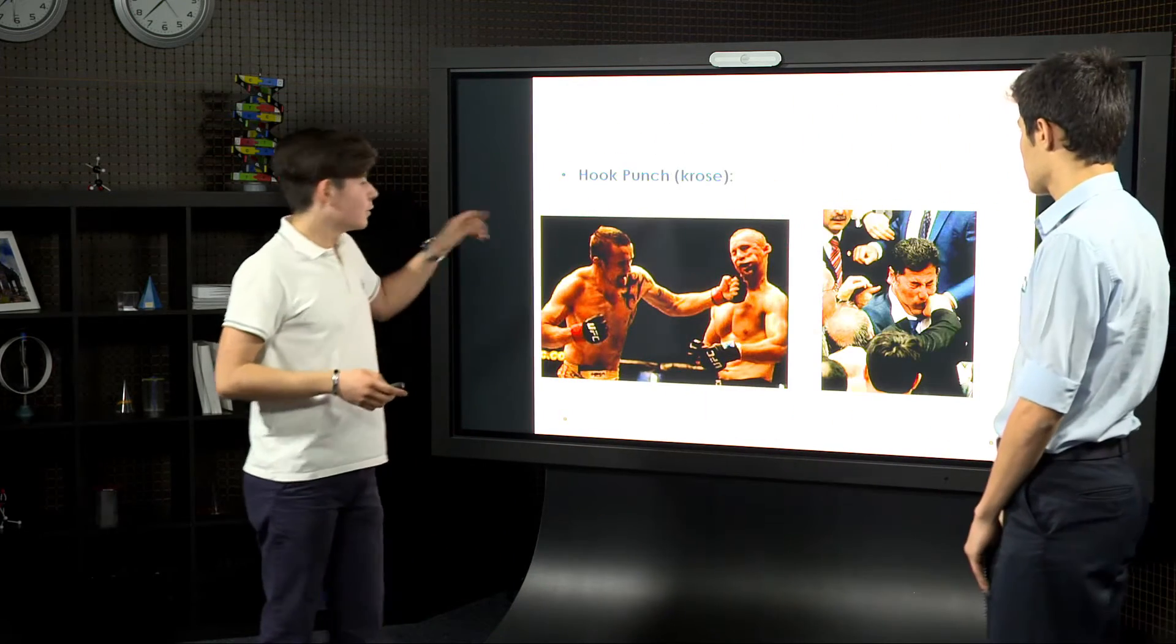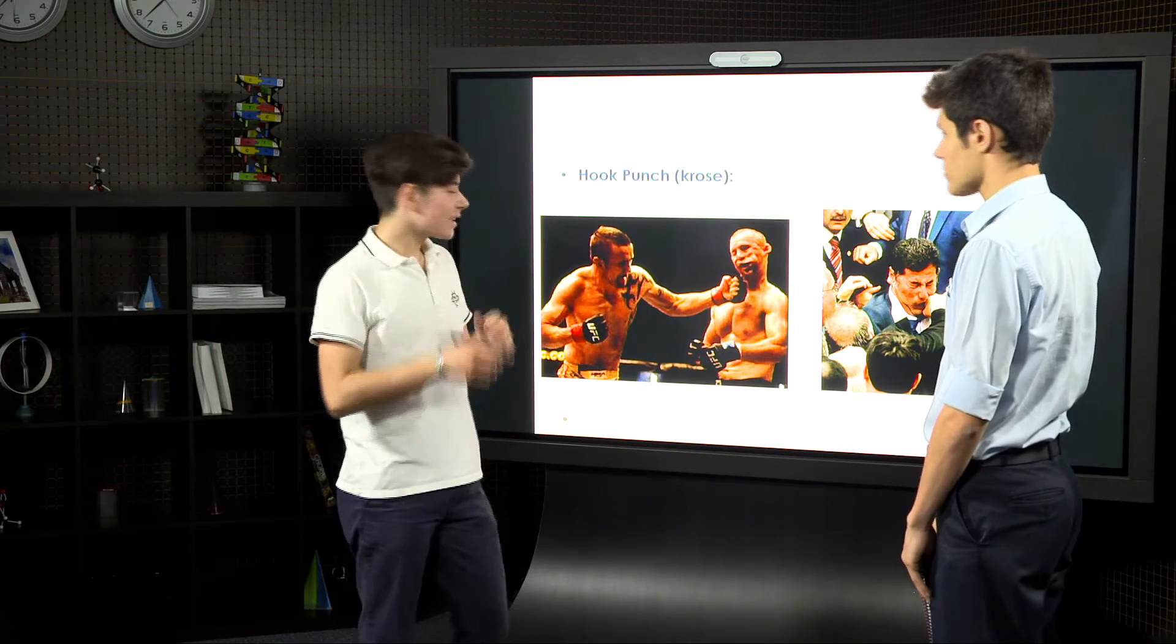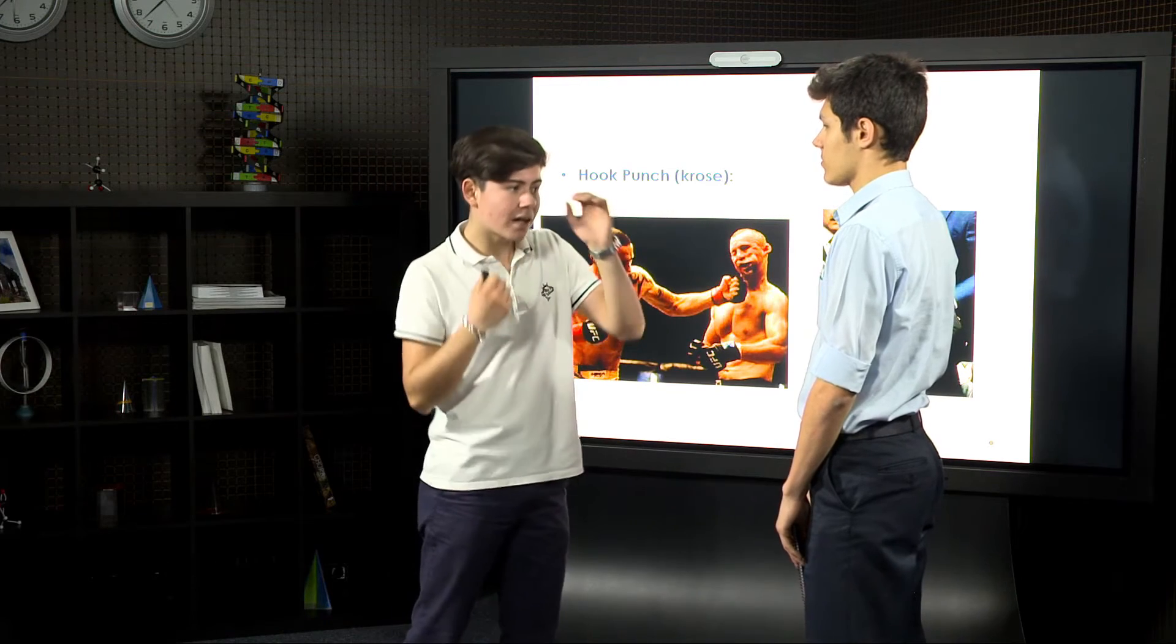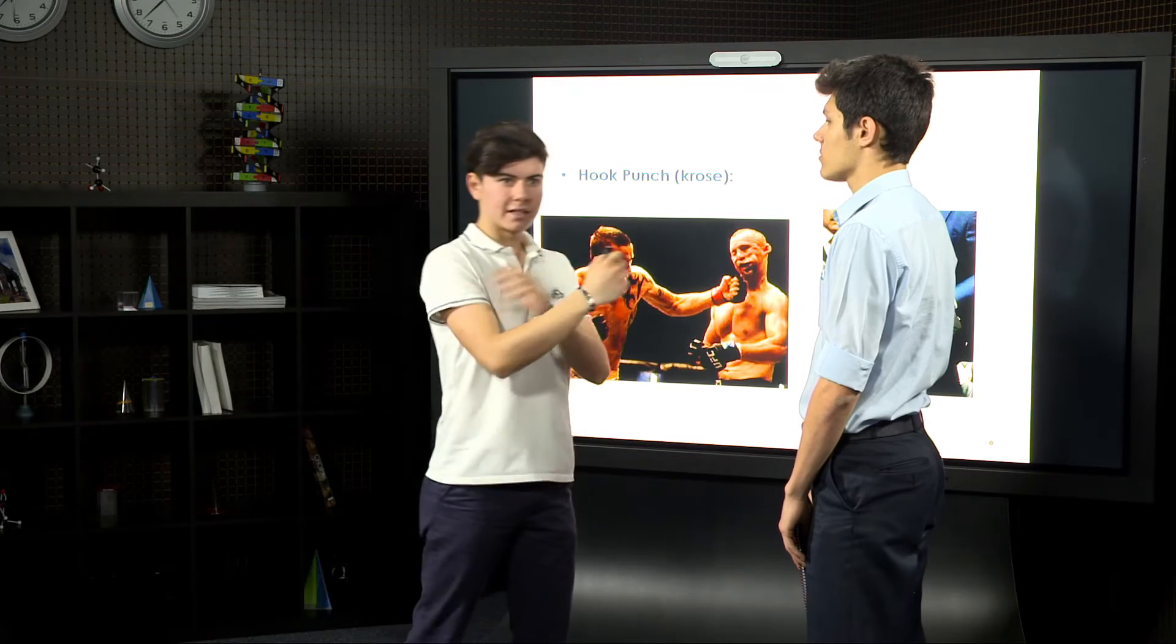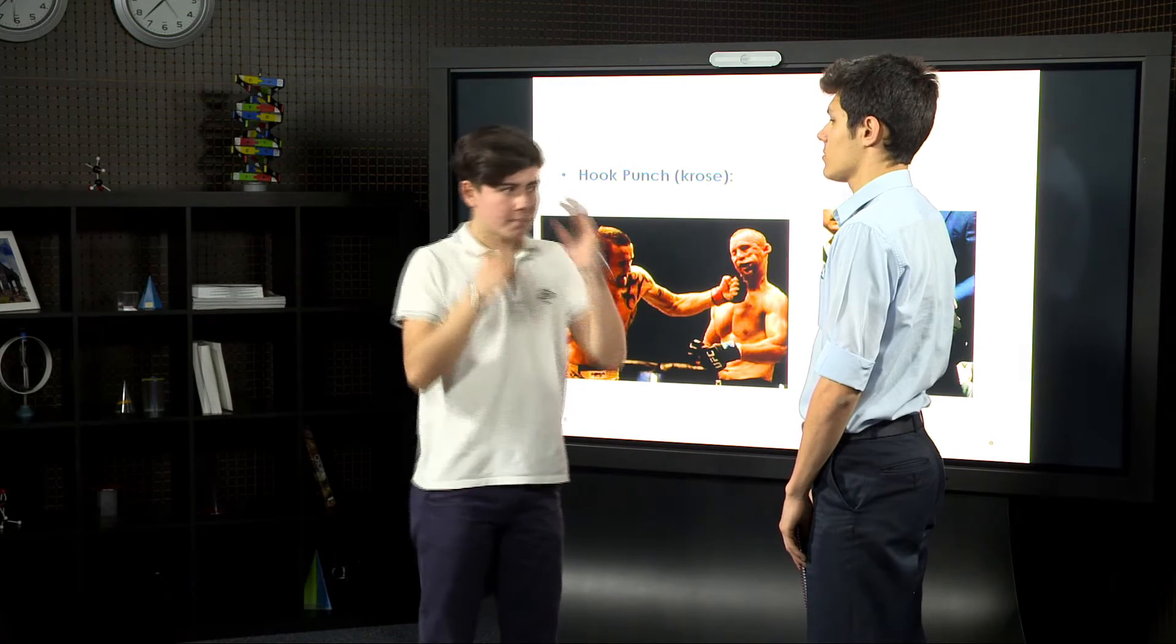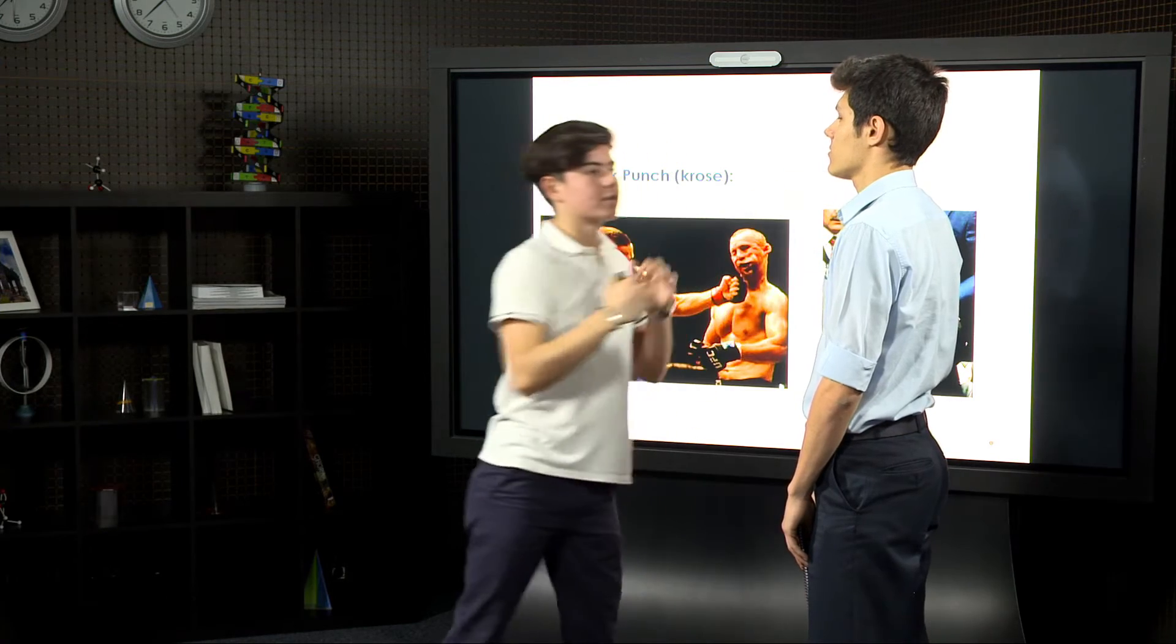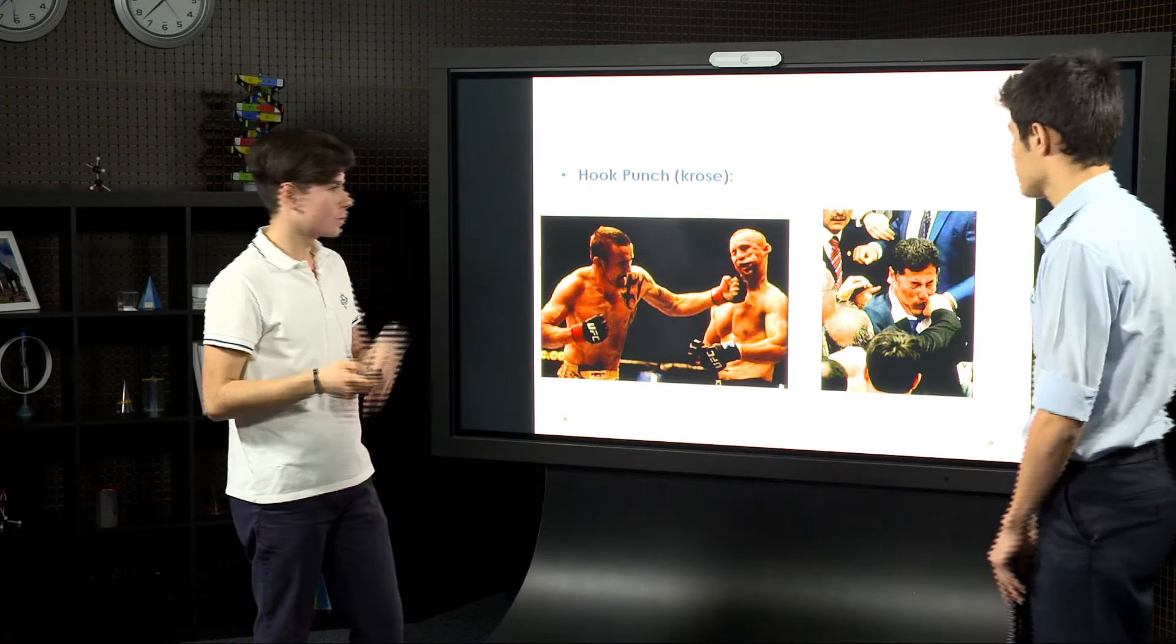Next one is a hook punch, a hook punch. It's like straight punch, but you hit your opponent under his chin. So it's like this, not with arm, full body. Like this. So it can give very much damage to your opponent.